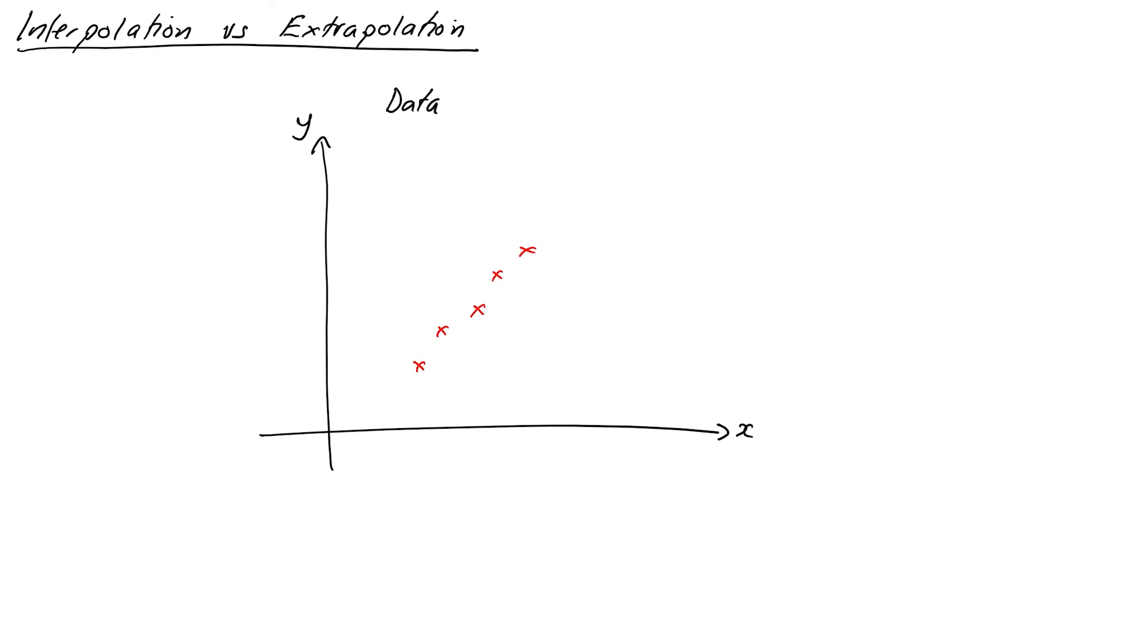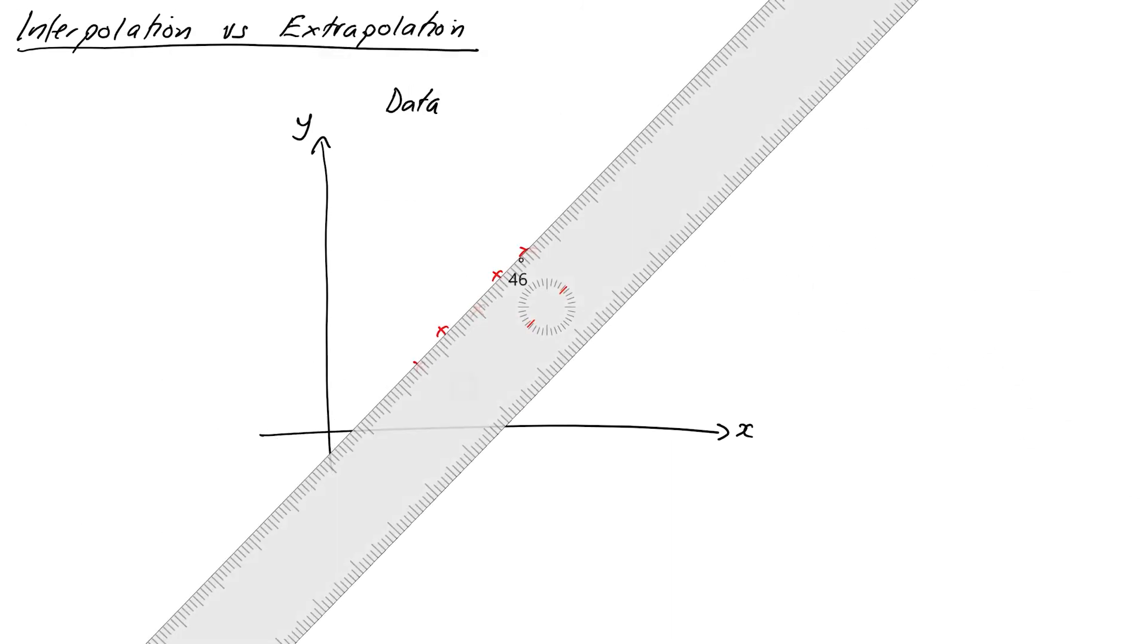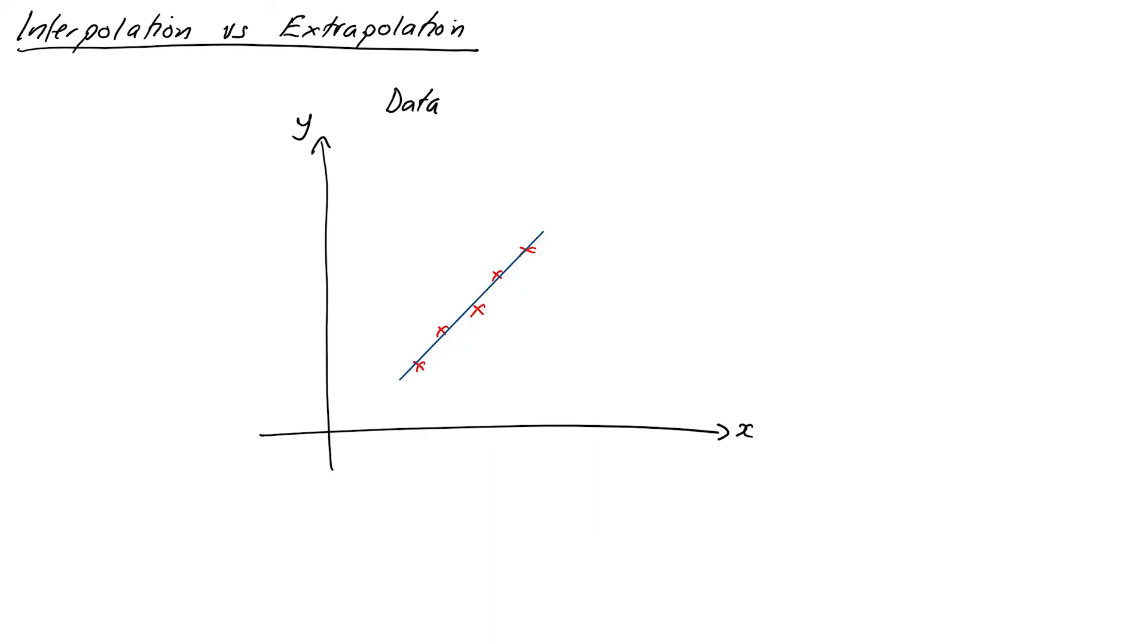Now the last little note that I want to make about straight lines is to do with interpolation versus extrapolation. Imagine you've gone out and you've collected some data, you've plotted them on some axes, and you can see that the data look like they have some kind of straight line relationship. So you've got your ruler out and you've drawn what you think is a line of best fit through your data, and you have used the methods from this video to calculate an equation for your line. Let's just say for the sake of argument that our data fell between x equals 10 and x equals 23.